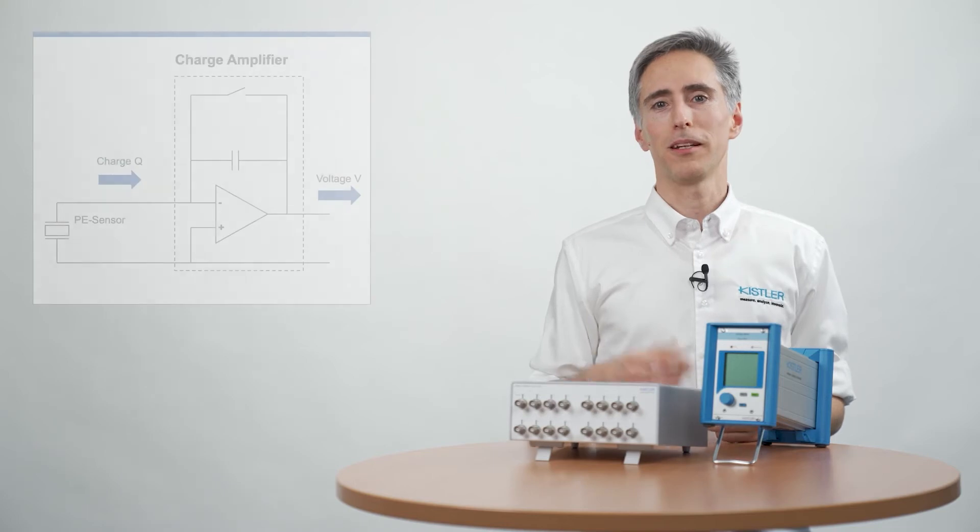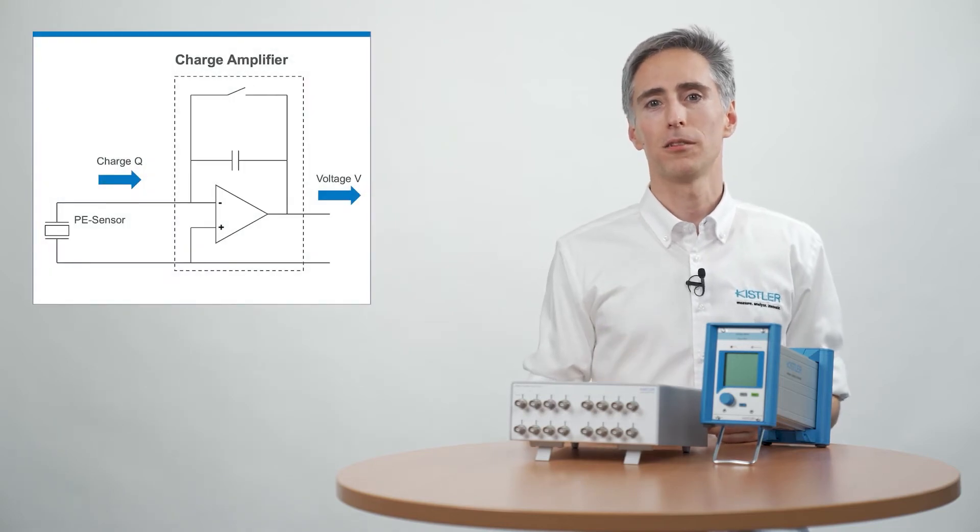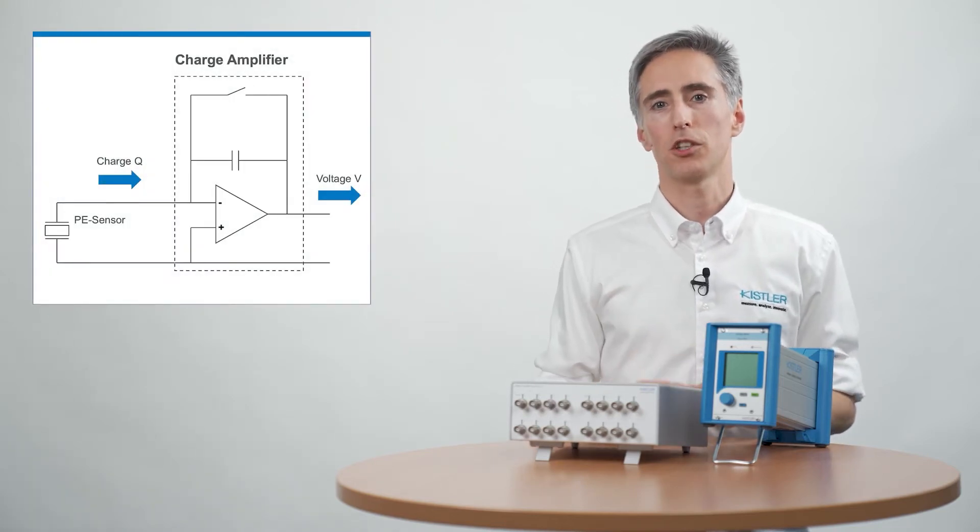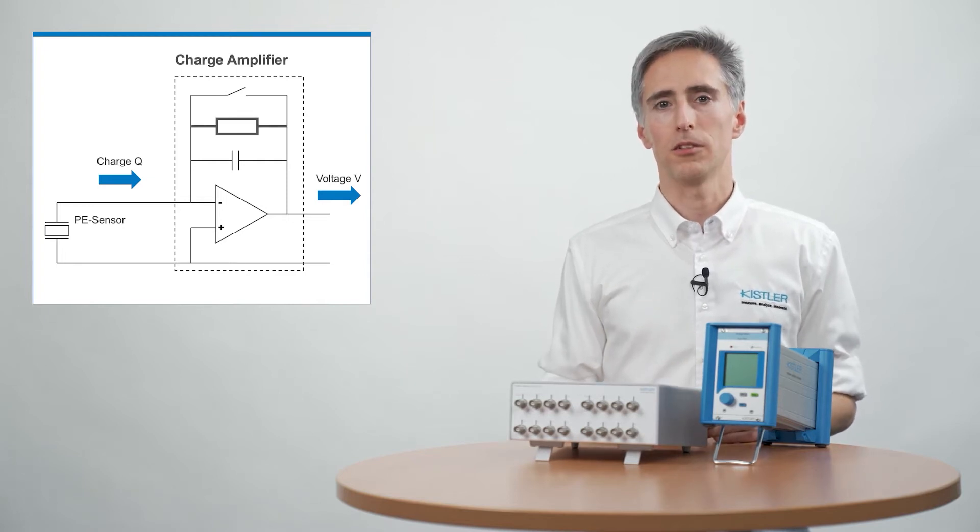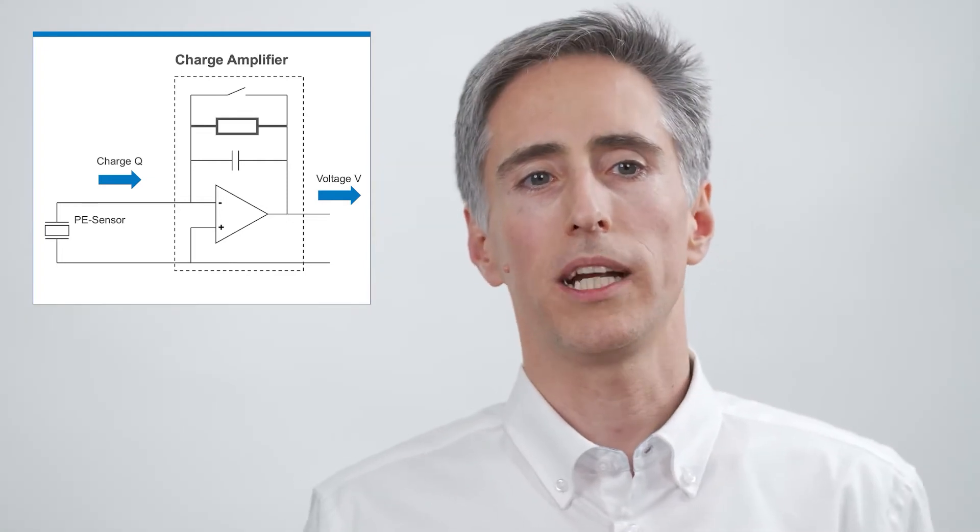Basically, it's the same charge amplifier principle as before, but in parallel to the range capacitor, which acts as a storage element for the charge, there is a resistor, the so-called time constant resistor. In combination with the range capacitance, a time constant value results.